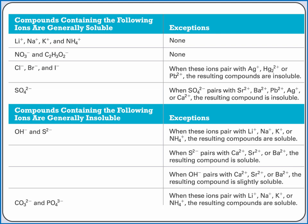In the top of this table, ionic compounds containing the listed ions are generally soluble, with the exceptions listing when the ionic compound is insoluble. For example, salts with a chloride anion are typically soluble, but silver chloride is insoluble because silver is one of chloride's exceptions.